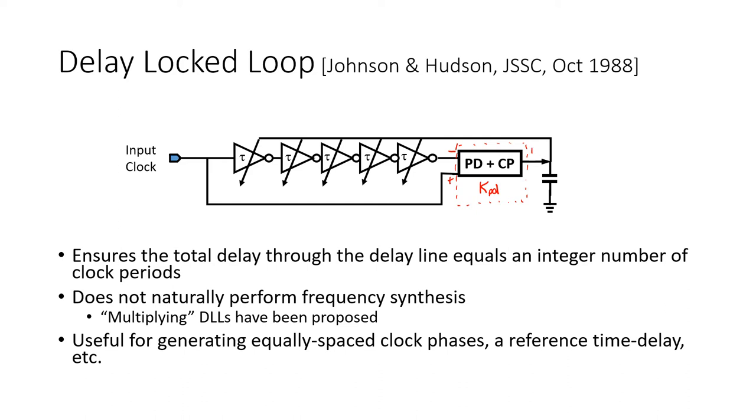Then we've got an output current here whose average value is proportional to the phase error. And that's then integrated on this capacitor. So it sees an impedance 1 over SC giving rise then to, so we can think of that as being the model for this whole thing.